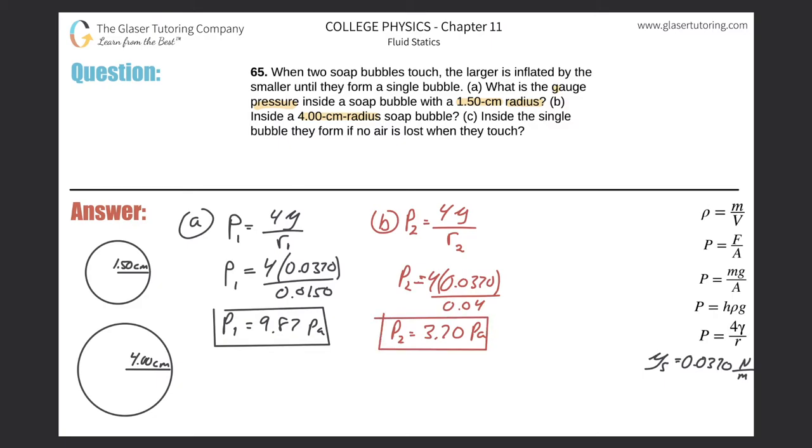Letter C asks what's the gauge pressure inside the single bubble they form if no air is lost when they touch. Basically, these two bubbles are going to come in contact with one another and merge into a single bubble. I'm sure you've seen this if you've ever played with bubbles.